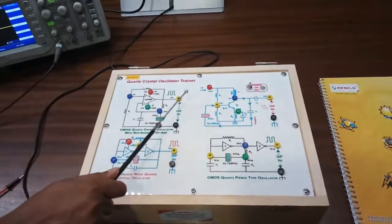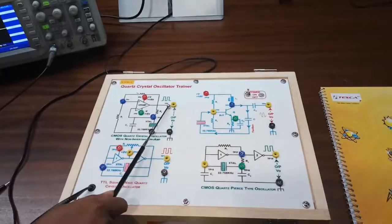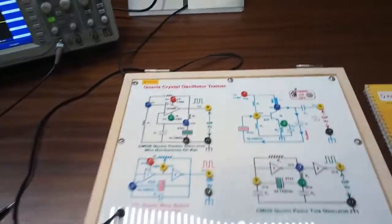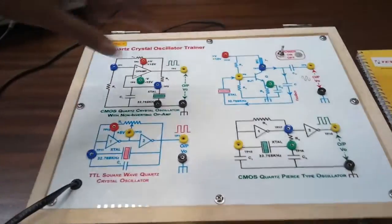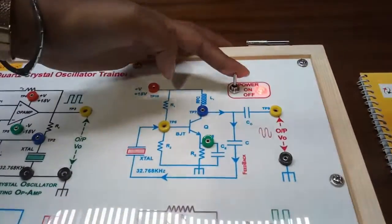And here these are the test points. This is test point 3 where we can observe the output waveforms. And this is the main switch to turn on or off the kit.